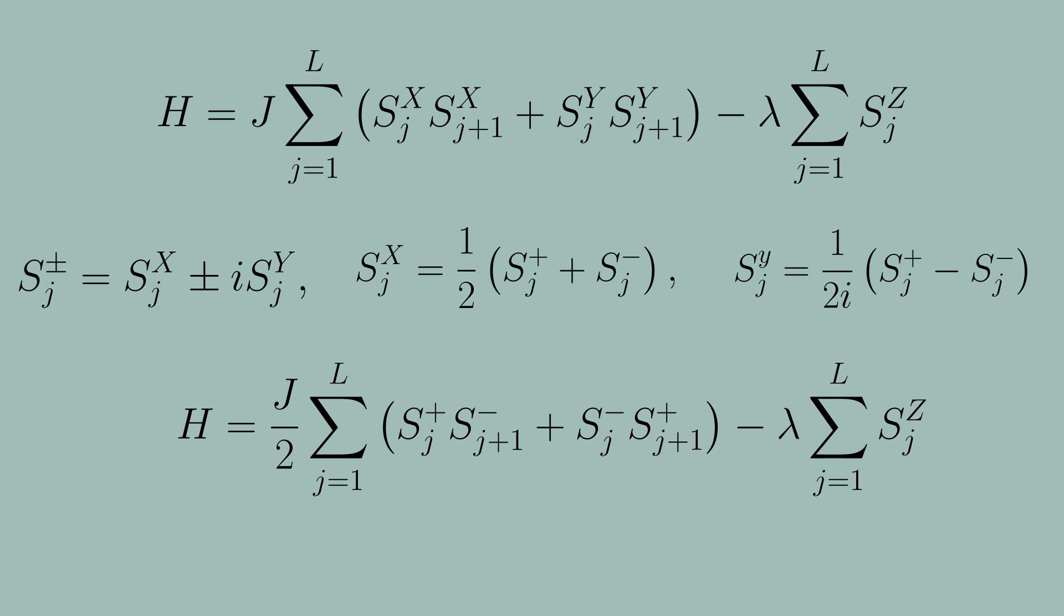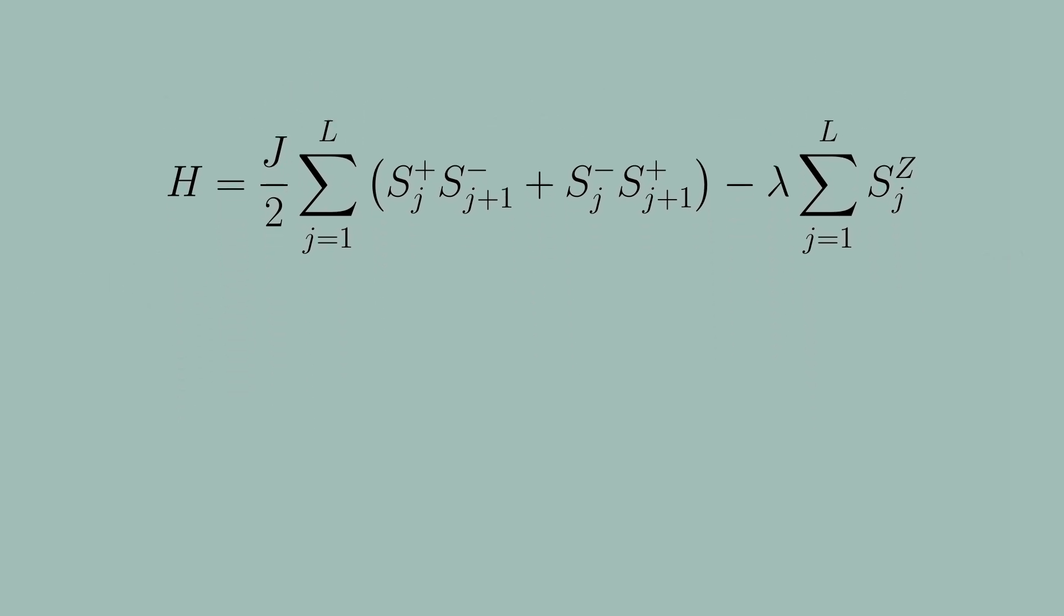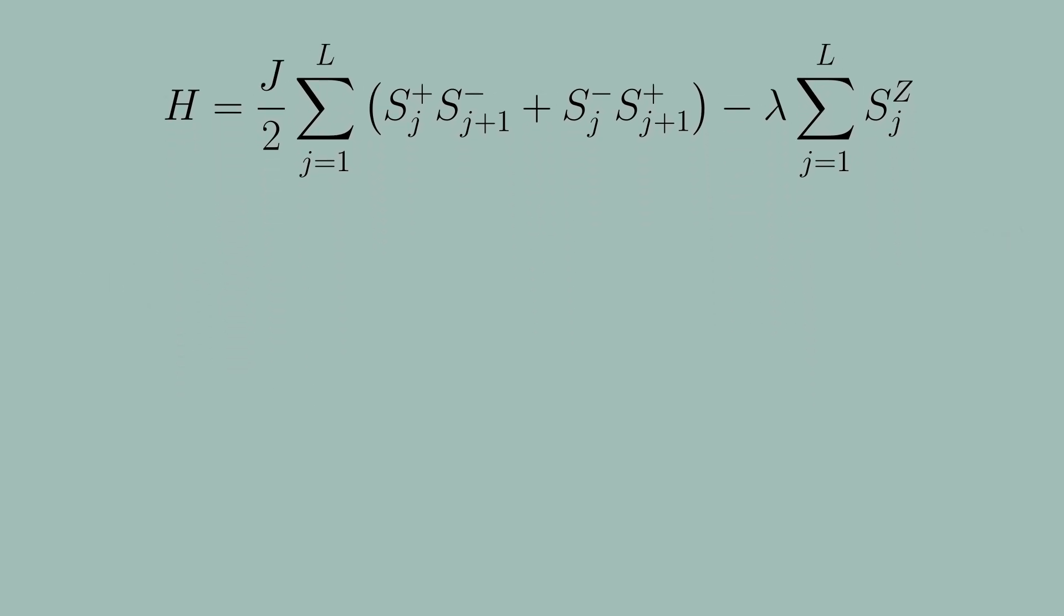Subbing in these definitions gives us back the following Hamiltonian. This new Hamiltonian can be understood quite straightforwardly just looking at the z basis of the spins. The interacting terms simply flip neighboring spins if they are anti-aligned.